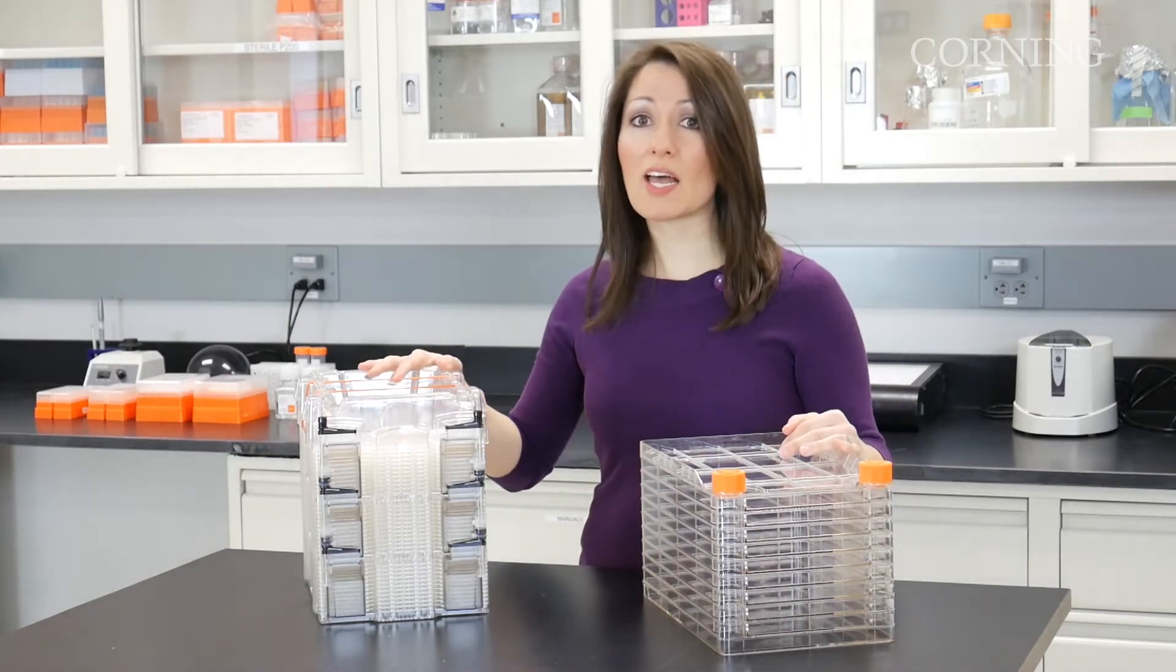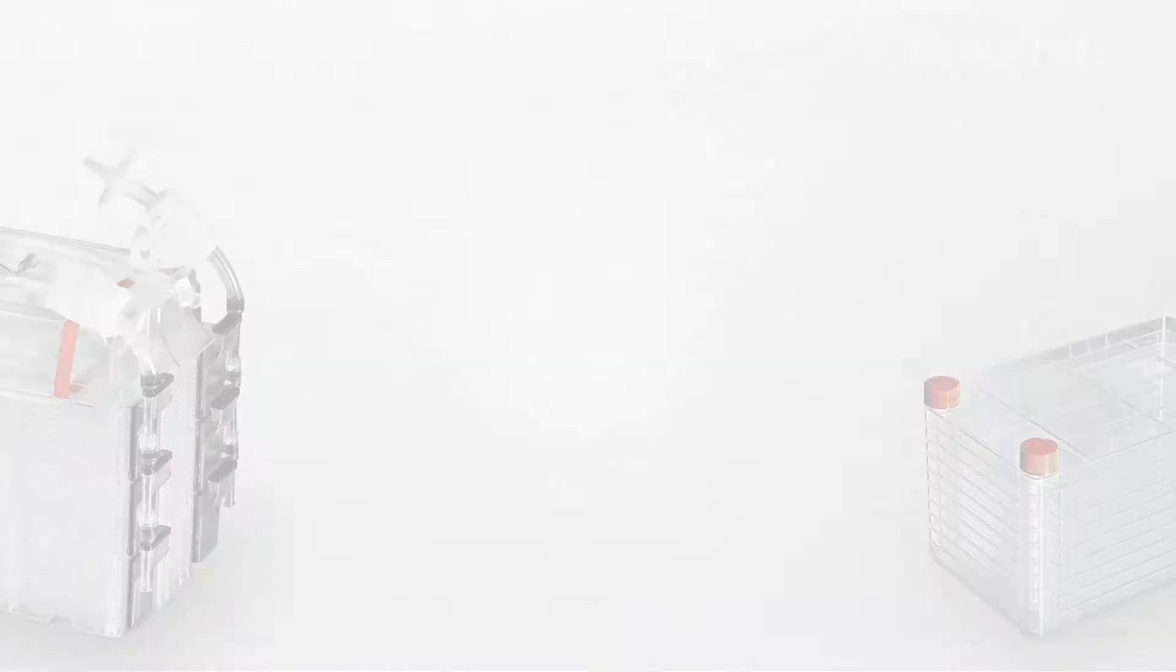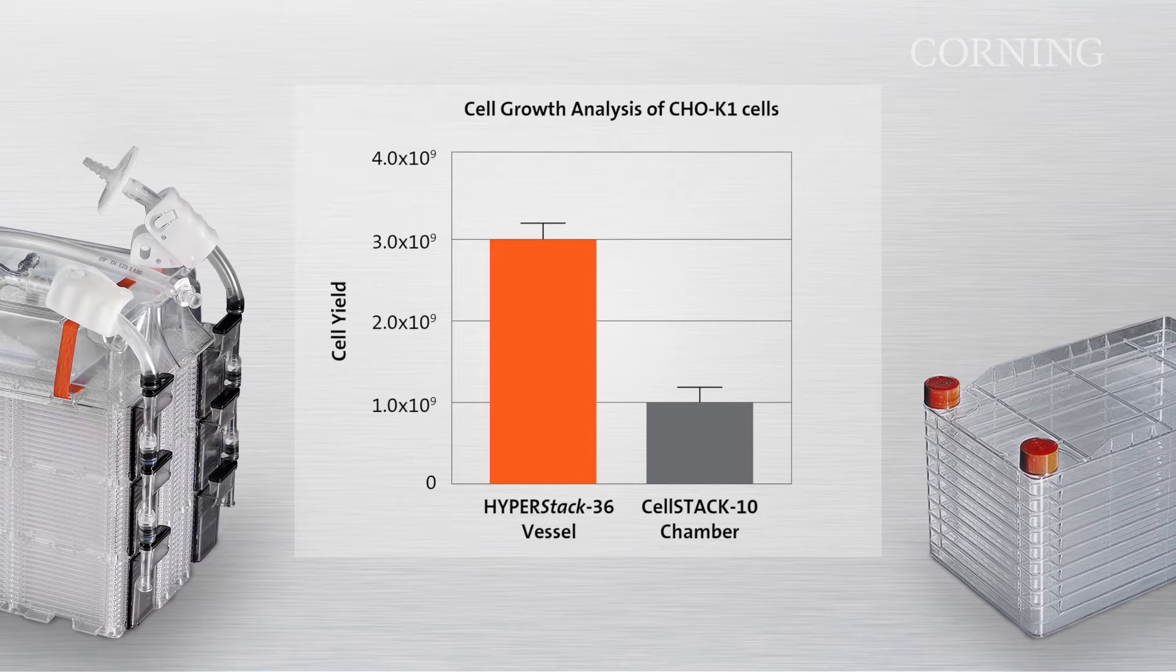With one 36-layer HyperStack, you can grow 2.8 times as many cells in about the same cubic footprint as in one 10-layer cell stack.